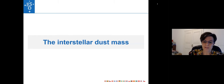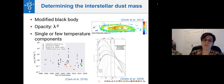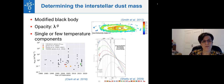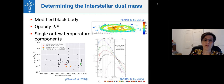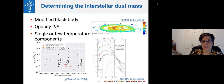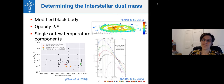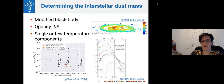Moving on to the interstellar dust mass: this is typically determined by fitting a modified blackbody to far-infrared and submillimeter emission, where the opacity of the dust is described as a power law with wavelength with index minus beta. Typically people use either single or very few temperature components with a single beta. But as you can see in the top right — observations of Andromeda fitted point by point across the entire galaxy — there is actually a large variation in beta across the galaxy. So fitting an unresolved galaxy with a single beta might not be very physical.